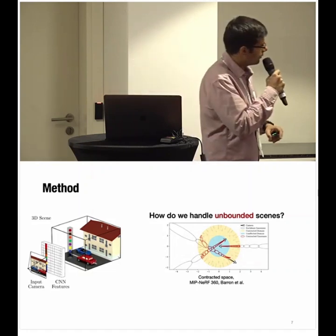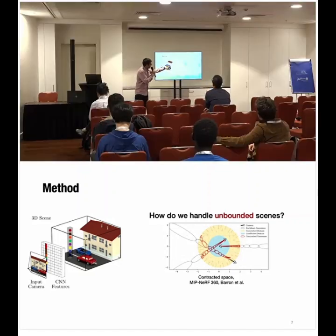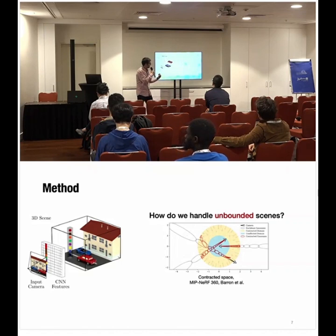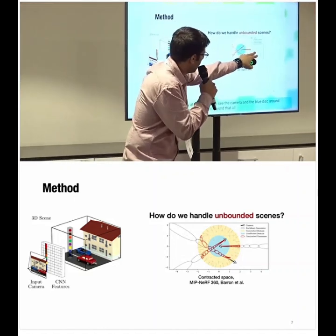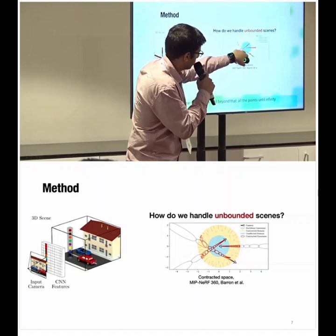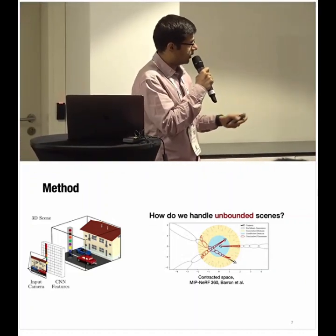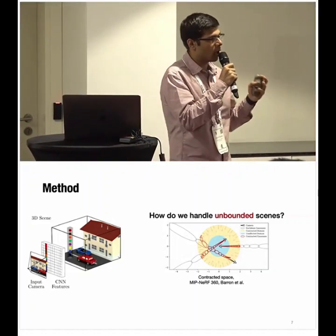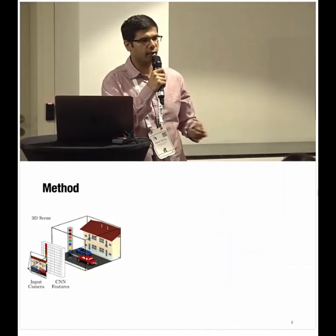Since we need to handle unbounded outdoor scenes, we use the contracted space idea from Barron et al. in MipNeRF 360. The camera is at the center; the blue disk uses linear coordinates, while points beyond that — up to infinity — are remapped based on disparity in the yellow grid, avoiding infinite samples during rendering.